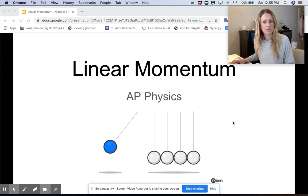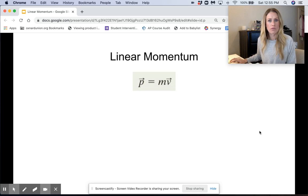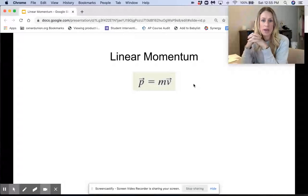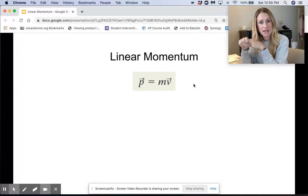Hi everyone. So this is going to be a short video about linear momentum. The equation for linear momentum is P equals M times V, where P is momentum, M is our mass, and V is the velocity.